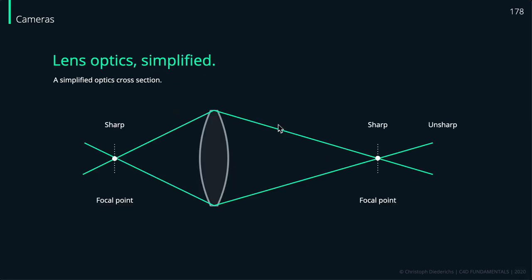The basic setup, very simplified: we have a lens, and two focal points — one where your object is placed and the other on your sensor. This is the case when everything is done right, and you get a sharp representation of your object on the camera sensor. If your object is too close or too far from your focal point, the image will be unsharp. This is a simple understanding of how optics and lenses work.